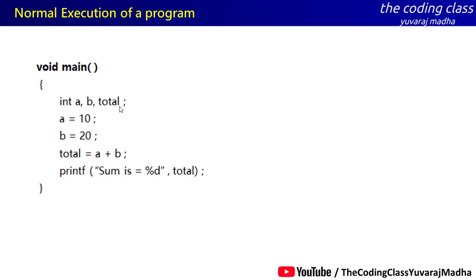The CPU executes the program. CPU is normal — it executes line by line in a single sequential order. First is total, then you add a plus b, then you declare variables. The CPU runs the program line by line. But decision-making statements work in the opposite way.